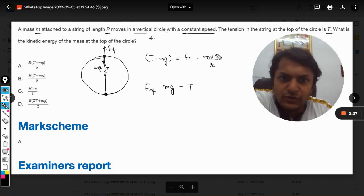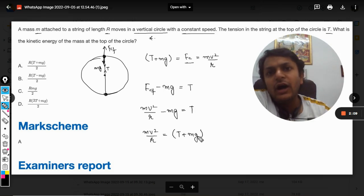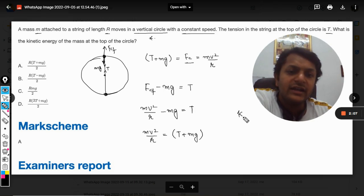We are going to substitute this mv² by R here - either you call it centripetal or centrifugal, it's the same thing because magnitude is the same. So this mg becomes: mv² by R is equal to T plus mg. Now I want to find the kinetic energy of the mass,